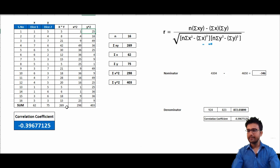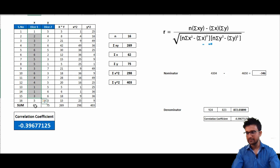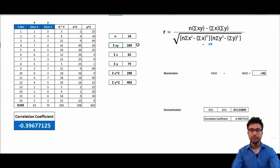Now I just have to calculate the sum of all these series, because the upper part of the formula requires sigma of xy — meaning the sum of these numbers from 5 to 15. I also need sigma x and sigma y — the sum of each column, and then the sum of x times the sum of y, plus the total number of data points. The values are: sigma xy = 269, sigma x = 62, sigma y = 75, sigma x squared = 298, sigma y squared = 403. We are able to calculate all these values.